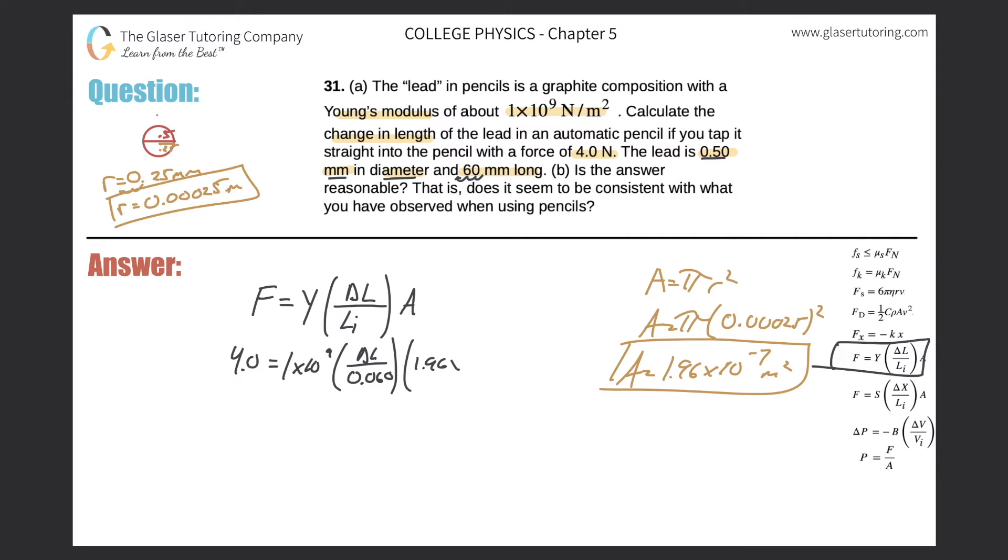So just plug it in: 1.96 times 10 to the minus 7. Let's clean it up. So 4.0, let's do 1 times 10 to the 9 times 1.96 times 10 to the minus 7, divide that all by 0.06, and we get a value of 3,270. We're just rounding a little bit.